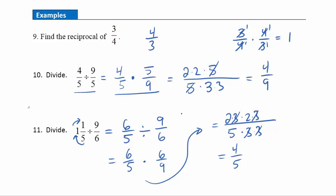One helpful saying to turn a division problem into a multiplication problem is called 'skip, flip, multiply.' Skip meaning the first fraction stays the same; flip meaning we take the reciprocal of the second fraction; and then multiply. So you can think of it as: skip, flip, multiply.